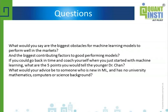I think the biggest obstacle for a machine learning model to perform well in live trading is data snooping bias and regime change. Data snooping bias actually has a name in machine learning — it is called the bias versus variance problem. Oftentimes you train a model very well, achieving very high accuracy in the training set, and it completely falls apart in the test set because there are too many parameters and they were overfitted to the noise of the training data rather than to features that are really repeatable.